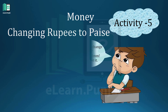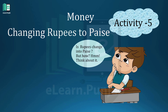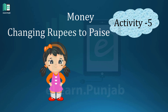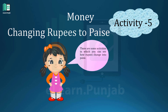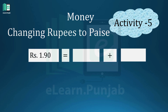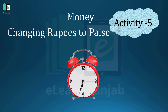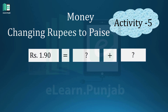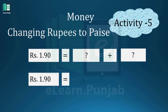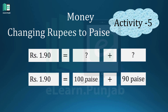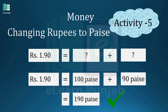Changing Rupees to Paise. How is rupees changed into Paise? Think about it. There are some activities in which you can see how rupees change into Paise. So friends, here we go. Do you know Rupees 1.90 is equal to how many Paise? Rs. 1.90 is equal to 100 Paise plus 90 Paise, which is equal to 190 Paise. This is the right answer.